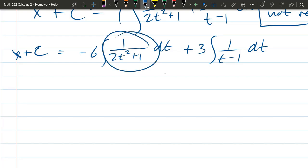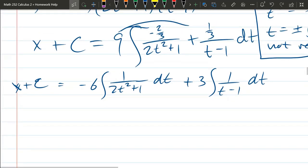And 9 times negative 2 thirds is negative 6. Integral 1 over 2t² + 1 dt plus 9 times the third is 3. Integral 1 over t - 1 dt. If it wasn't for that stupid 2, that right there would be tan inverse. But that stupid 2 is there. So there's a few ways to deal with it. Let's push it into the square. So you could write it as square root 2 times t whole thing squared. That's 2t². And that's what we wanted.